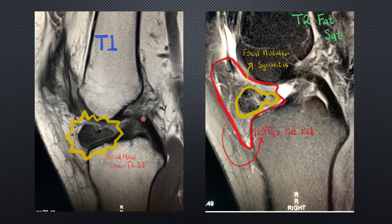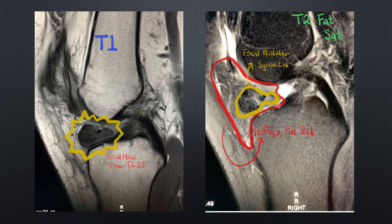The differential diagnosis for an infrapatellar fat pad mass by location includes focal nodular synovitis, which we are going to discuss. Also, we can have Hofitis, which is idiopathic inflammation of the infrapatellar fat pad — also known as Hoffa's fat pad, which is why it is called Hofitis. Additionally, tophaceous gout can accumulate at the infrapatellar fat pad. We can also have synovitis associated with an inflammatory or infectious arthropathy. And if the patient had prior arthroscopy and ACL repair, we can have a cyclops lesion, which is fibrosis of the infrapatellar fat pad.